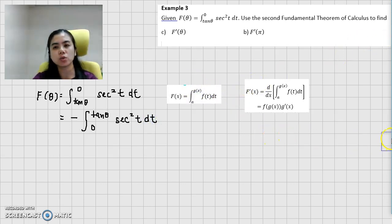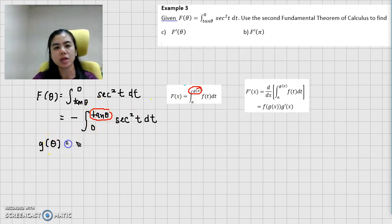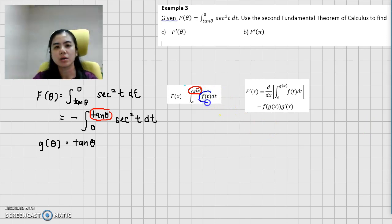Once you have changed it into the general form, then you do the comparison. You can see that g(x) is basically tangent theta. We do not have g(x) but we have g of theta. We have changed the formula according to the question, so g of theta is equal to tangent theta. And f(t) will be secant squared t.